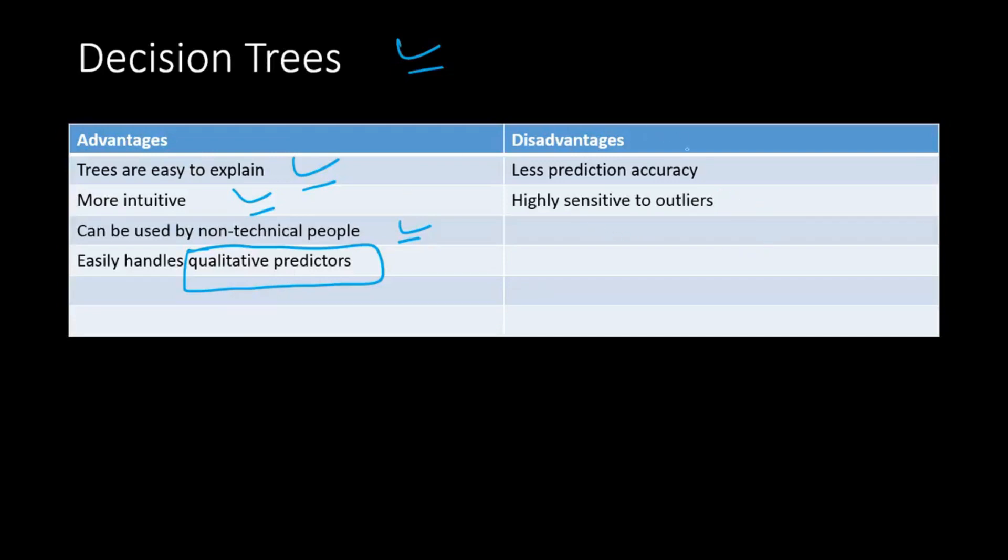The disadvantages of using decision tree is that the predictive power or the ability to predict your target variable is less. So that's one disadvantage. Linear regression does a better job. And second thing is that it's highly sensitive to outliers. If your data has so many outliers then the prediction is bad. So that you can handle better in linear regression. It's not that sensitive. So these are some of the good things and bad things about decision tree.